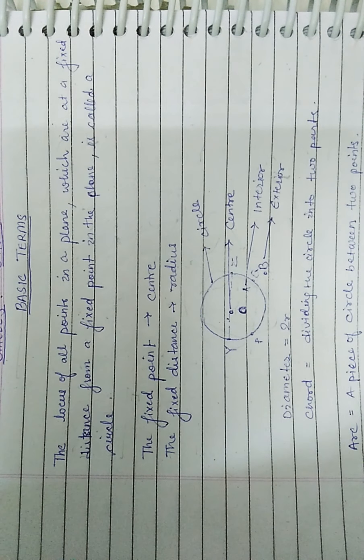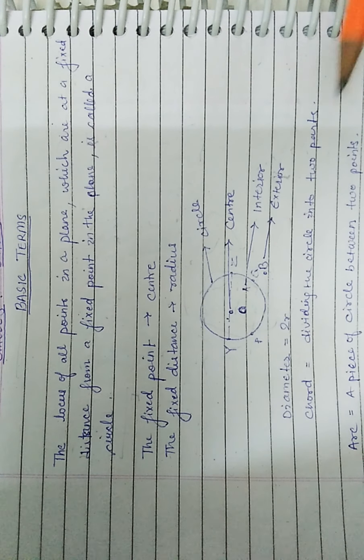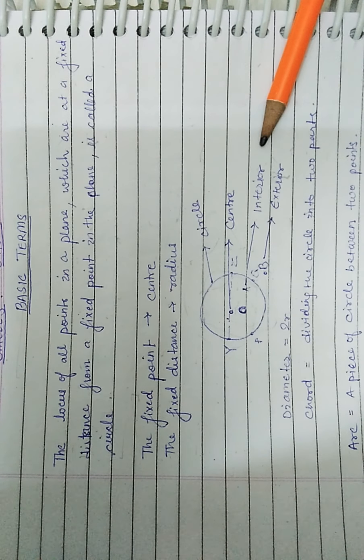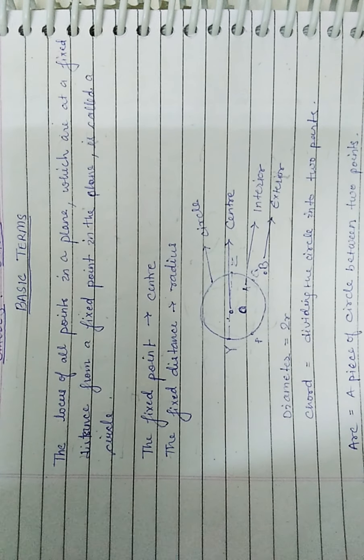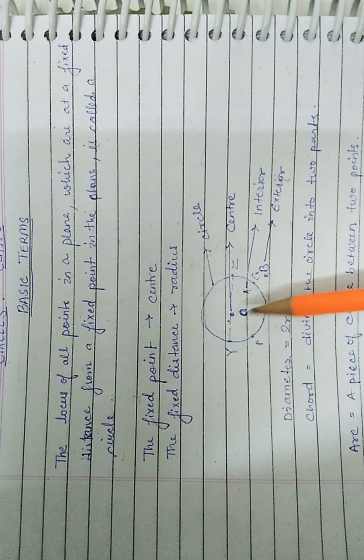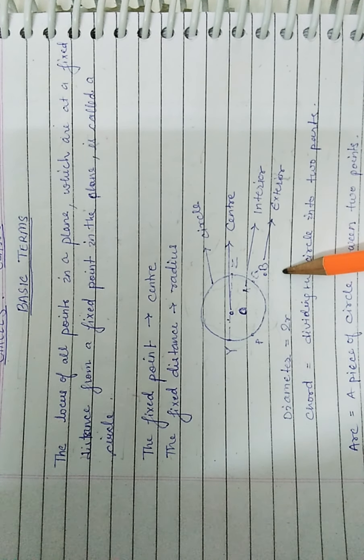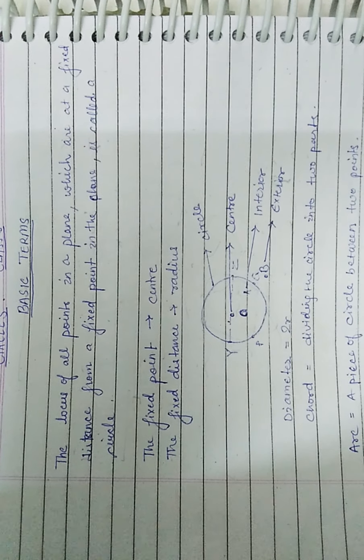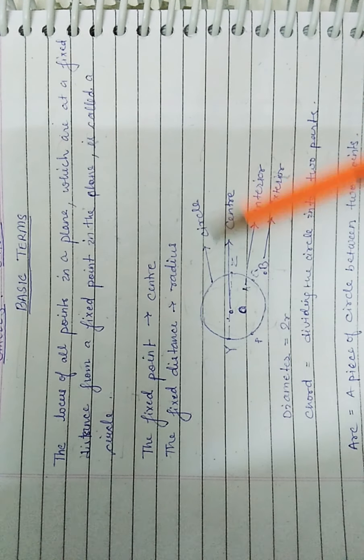Let us talk about the basic elements of the circle. The circle has an exterior, interior, and the circle itself. Any point present inside the circle is the interior, and any point outside is the exterior. The boundary of the circle is the circle.